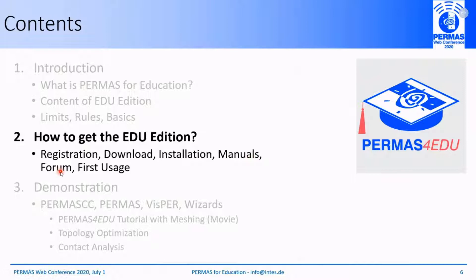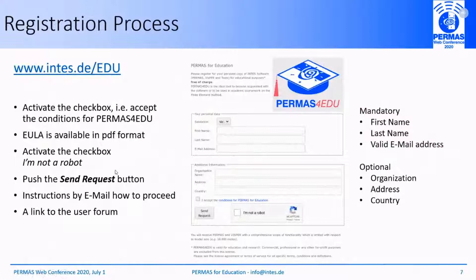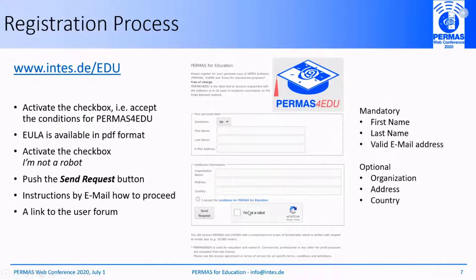With respect to the registration process, we offer a website where you will find a form with some information you need to share with us. Mandatory entries include your first name, last name, and a valid email address. Optional information includes your organization, address, and country. An end-user license agreement is available in PDF format. Once you have entered your information, you have to activate the checkbox 'I am not a robot' and then push the send request button. Further instructions will be provided by email, and you will receive a link to the user forum.